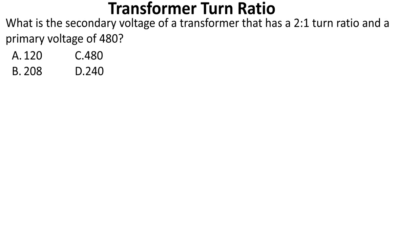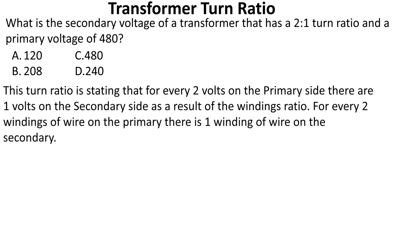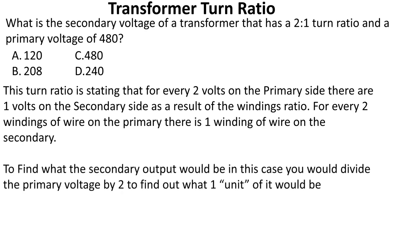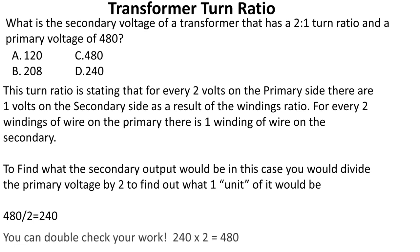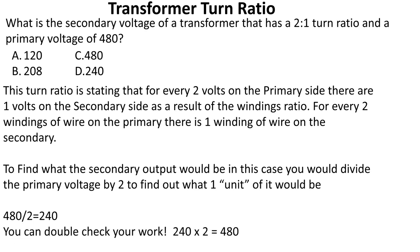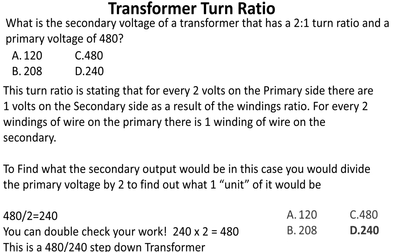What is the secondary voltage of a transformer that has a two-to-one turn ratio and a primary voltage of 480? This turn ratio states that for every two volts on the primary there is one volt on the secondary. Divide the primary voltage by two: 480 divided by two gives us 240. We double-check by multiplying 240 by two, which brings us back to 480. This is a 480/240 step-down transformer and we select D.